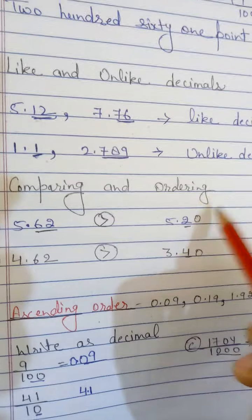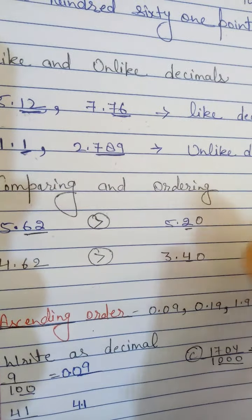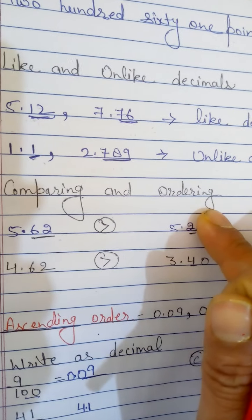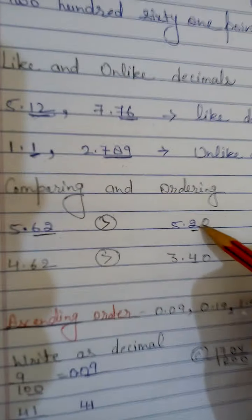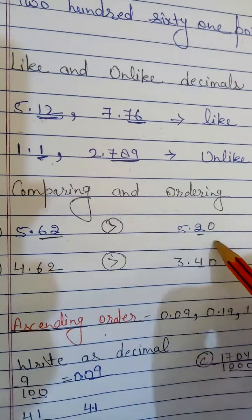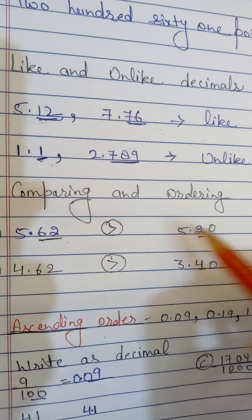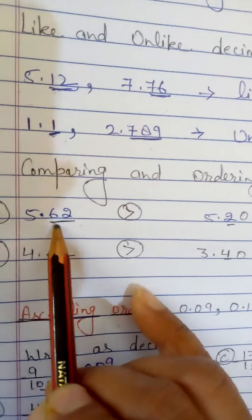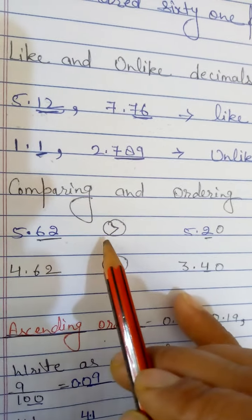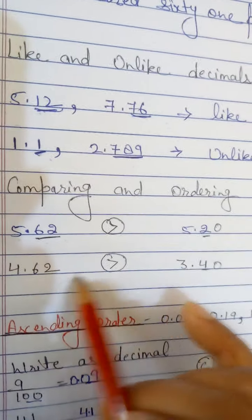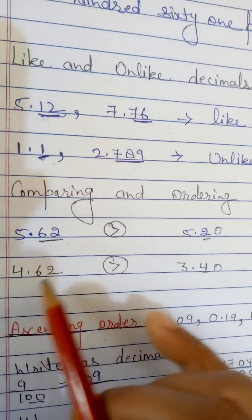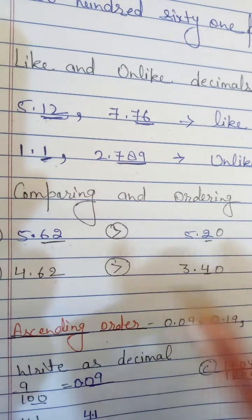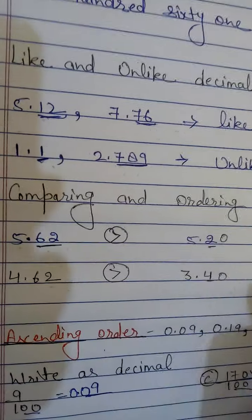Now let's see comparing and ordering decimals. We have 5.62 and 5.2. To compare, first convert the unlike decimal to a like decimal by adding a zero: 5.2 becomes 5.20. Now compare: 62 versus 20 — so 5.62 is the greatest number. For 4.62 and 3.4: add zero to get 3.40, then compare 62 and 40 — so 4.62 is the greatest number.